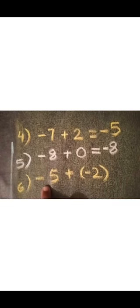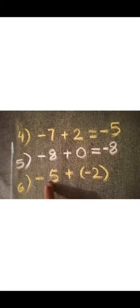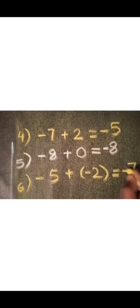Next question: minus 5 plus minus 2. Here both integers are negative — 5 is a negative integer and 2 is also a negative integer. When adding integers with the same sign, ignore the sign and add the numbers. So 5 plus 2 equals 7. Then give the common sign to their sum. The common sign is minus, so the answer is minus 7.